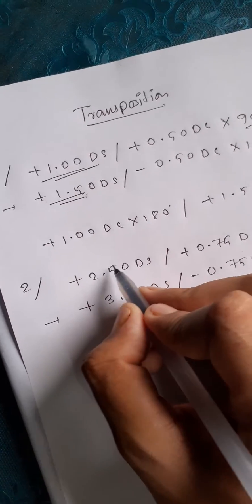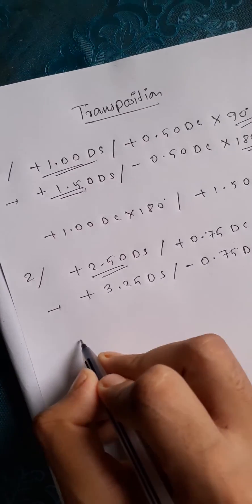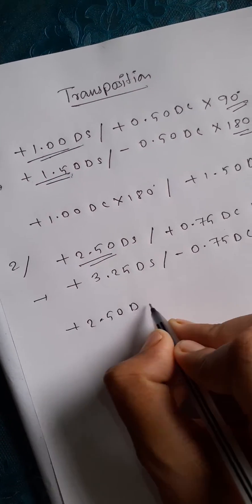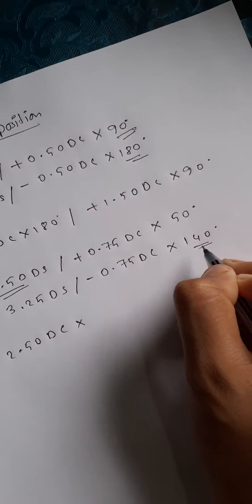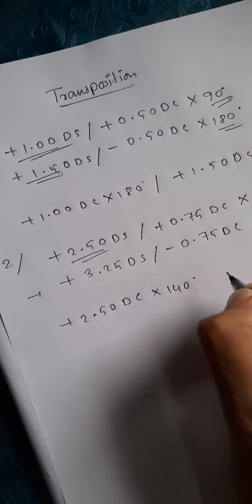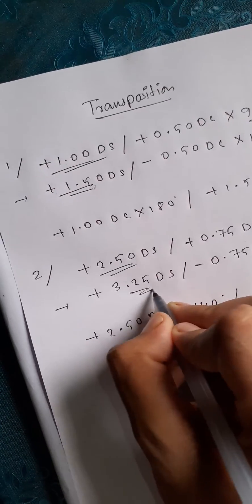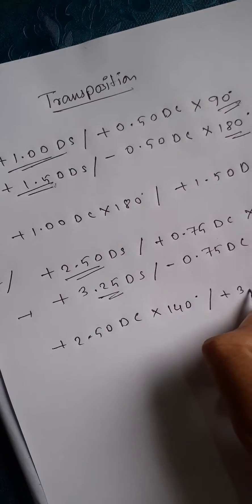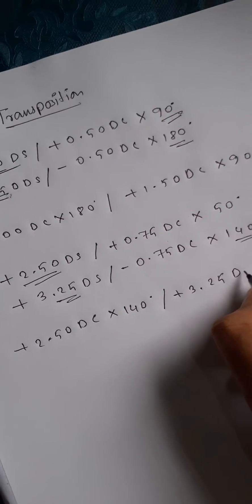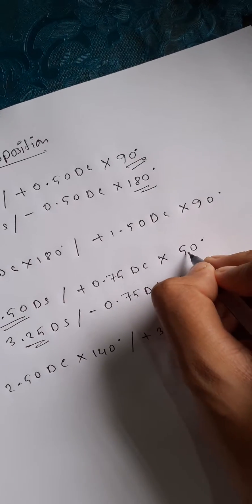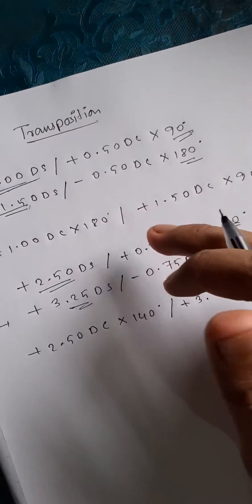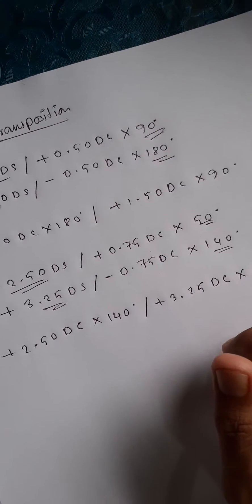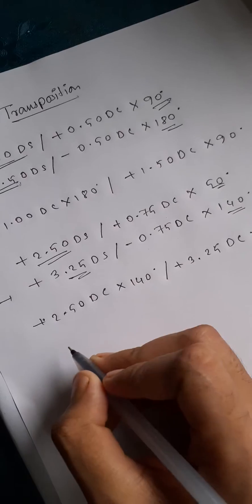To create the double cylinder form: the first cylinder power is +2.50 diopter cylinder with its opposite axis, 140 degrees. The second cylinder power is +3.25 diopter cylinder with axis 50 degrees. That's how we can convert a sphero-cylinder power to double cylinder form.